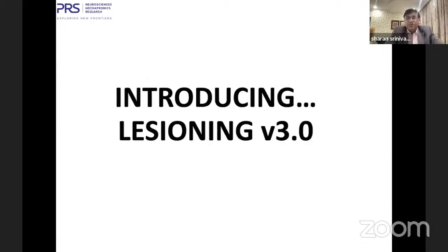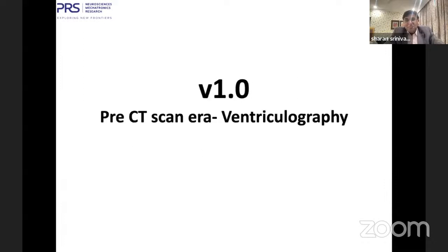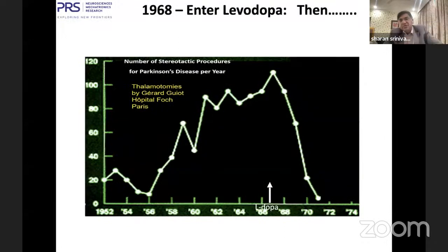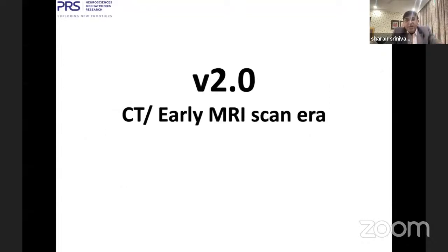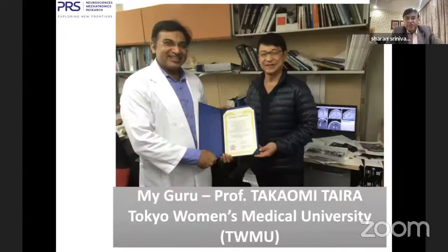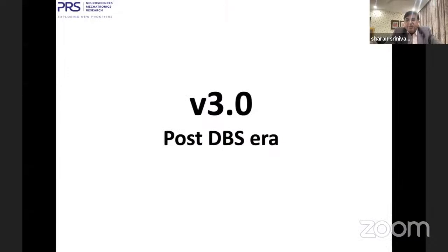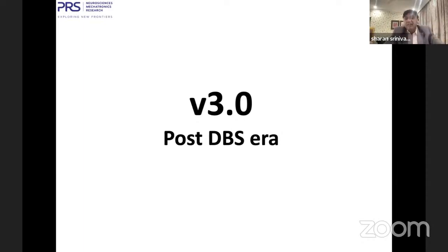Let us look at the world of neuromodulation: VR, AR, MR, robotics, AI, ML. As doctors, we come from the world of ARR — actual real reality. Our patients are real, their suffering is real, our treatments are real. I want to introduce a concept I learned from Professor Takwami Tara at Tokyo Women's Medical University in Japan in 2015 — lesioning brain circuits. Version 1.0 is the pre-CT era with ventriculography in the 1950s. Then Levodopa came in and surgeries came down drastically. Then levodopa-induced limitations and side effects kicked in, leading to a revival of stereotactic neurosurgery — version 2.0, the CT/early MRI era. Version 3.0 is the post-DBS era when we realized DBS is not the solution for everything.